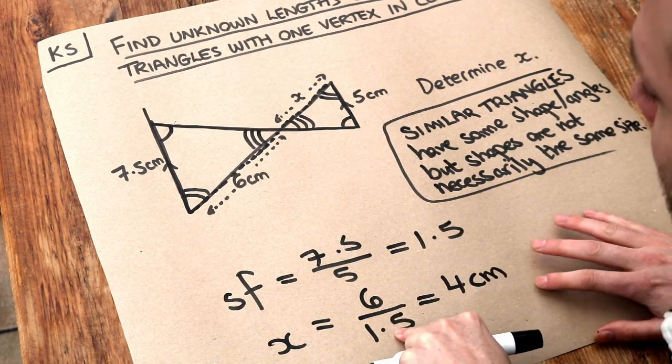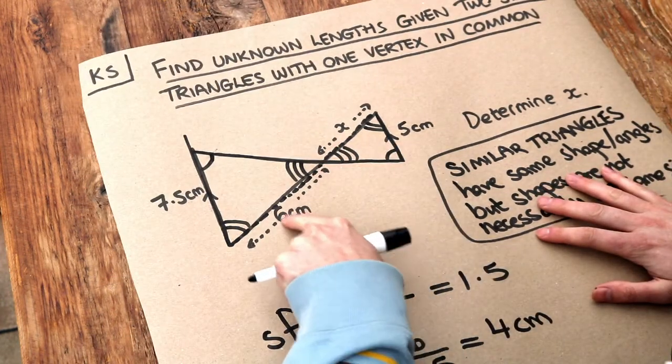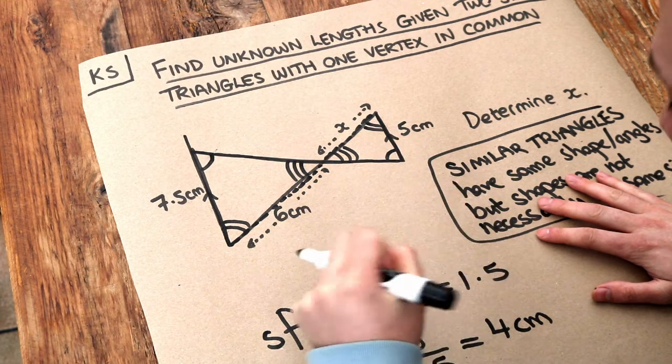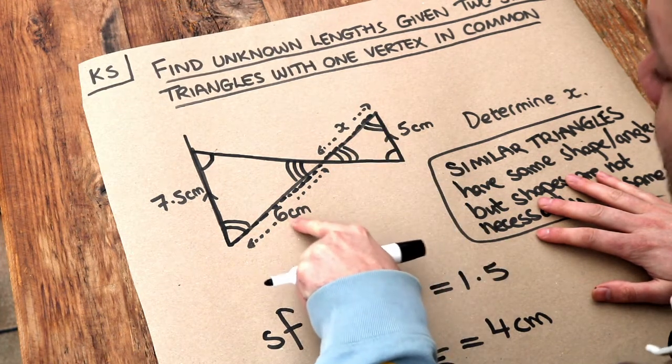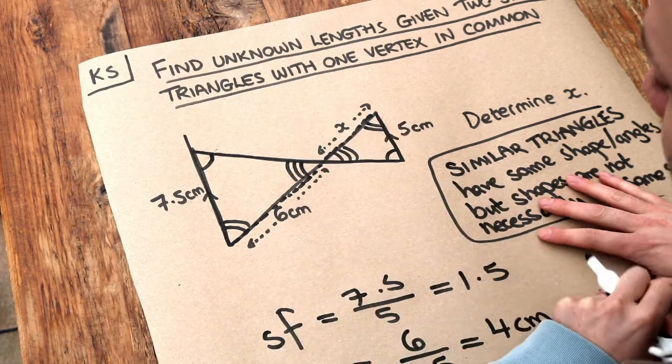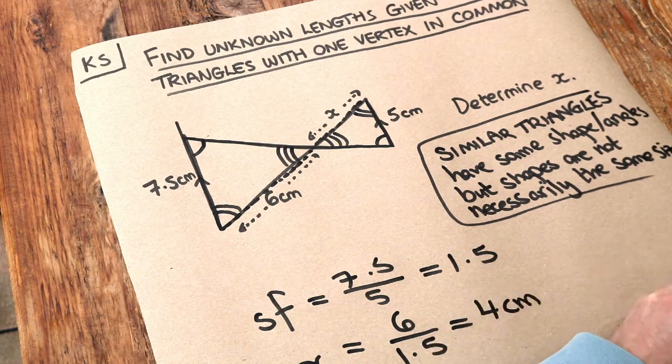So whether we divide or times by that scale factor is just common sense. We can see that x is smaller than 6 so we're going to divide the 6 by 1.5. But if this length was bigger than this then we times the 6 by the scale factor of 1.5 to get that length. So just use your common sense whether you divide or times by that scale factor.